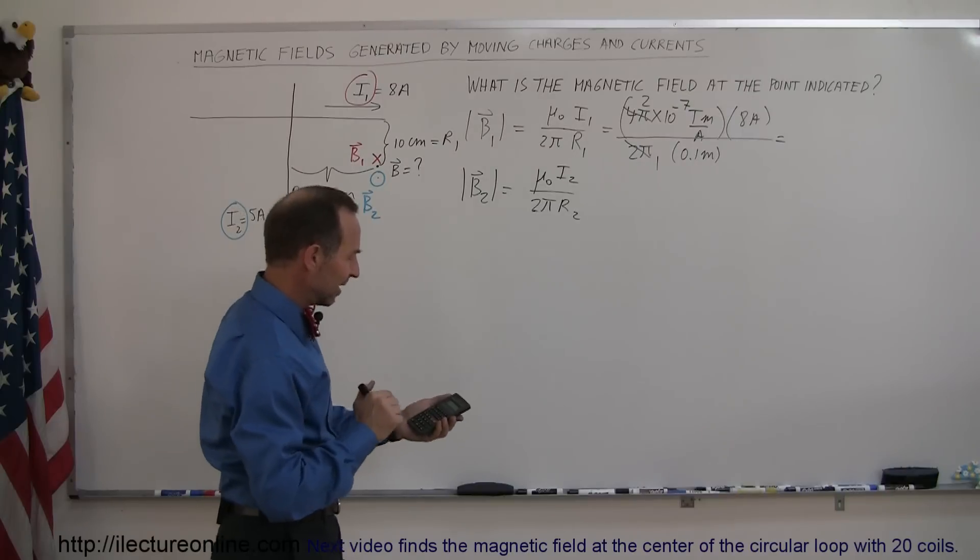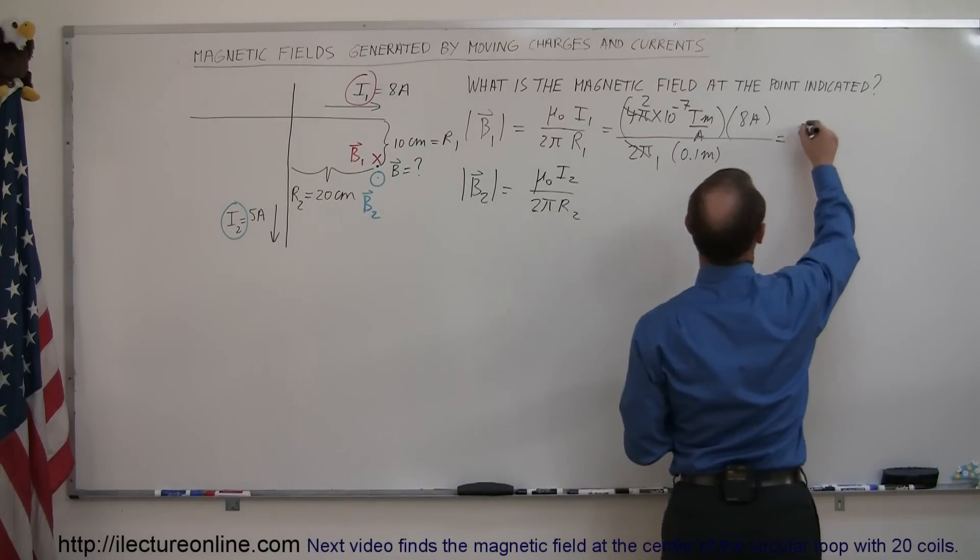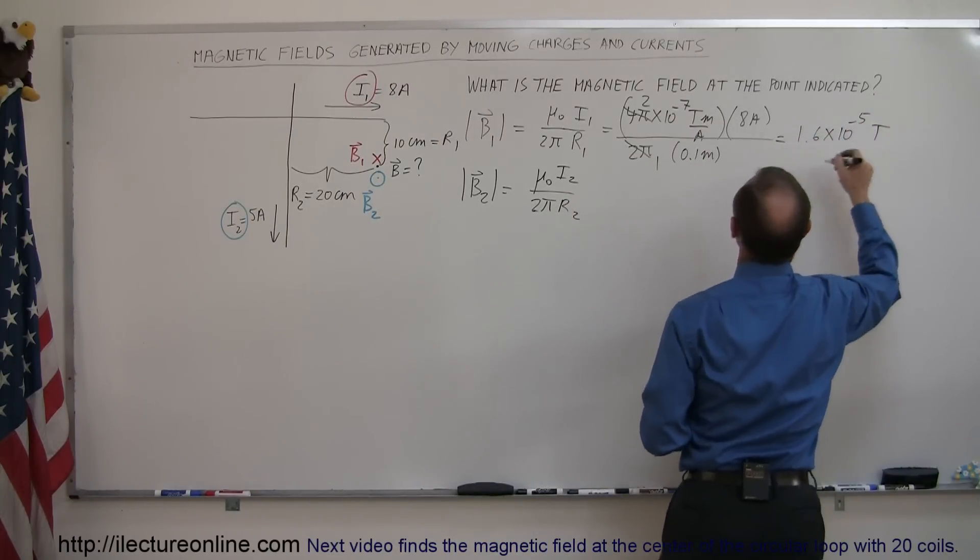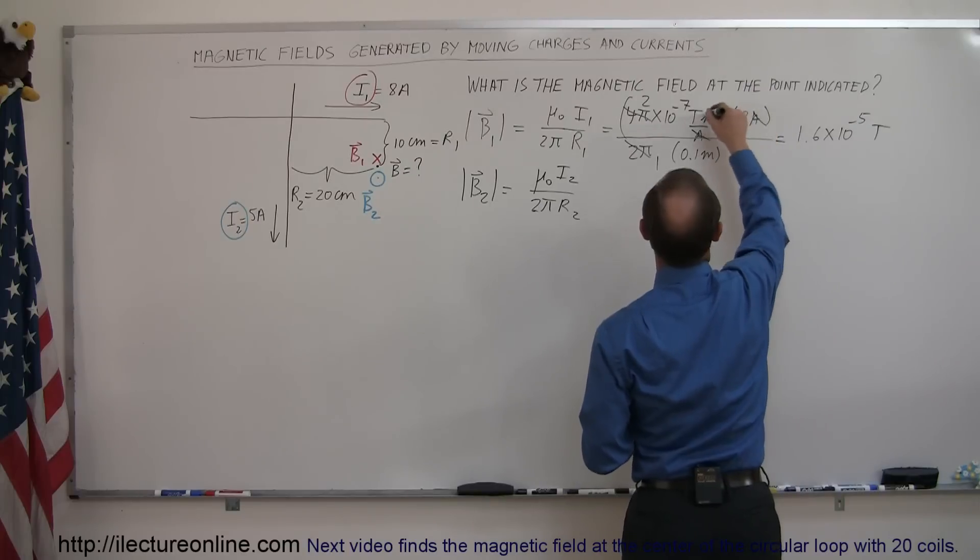And we get 16, or is it 16 or 1.6? So this is equal to 1.6 times 10 to the minus 5 teslas. Amps cancel amps, meters cancel meters, so you get teslas.